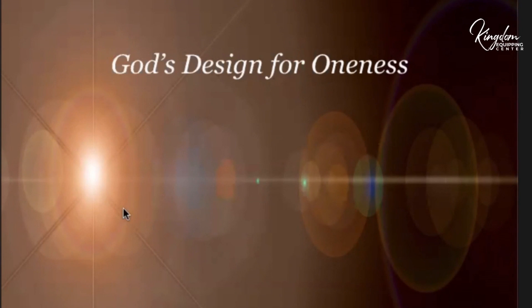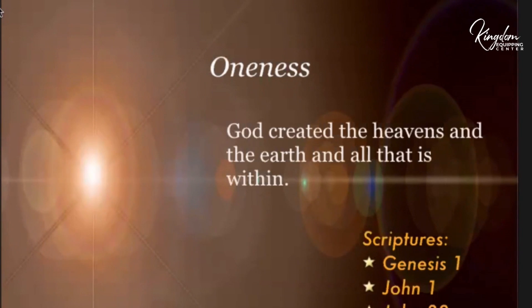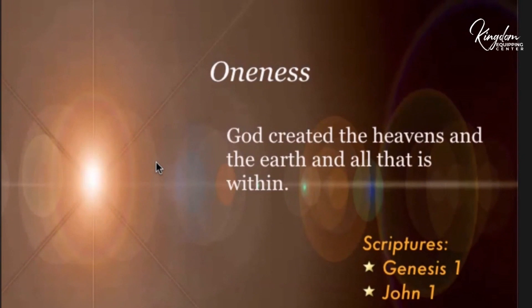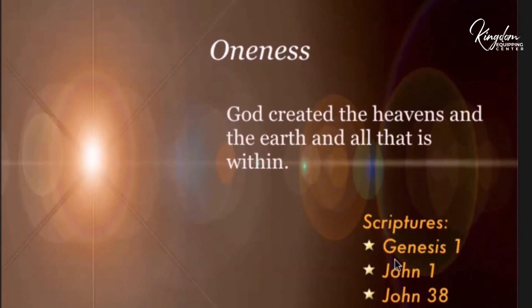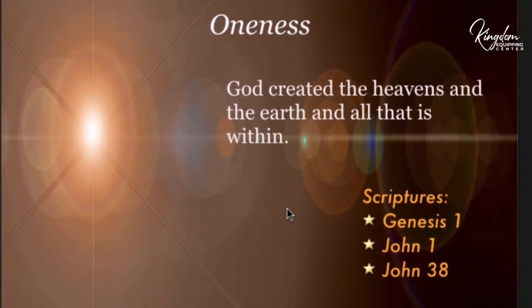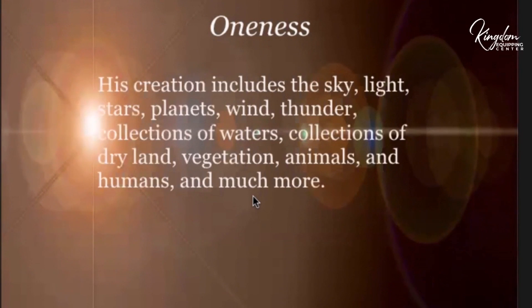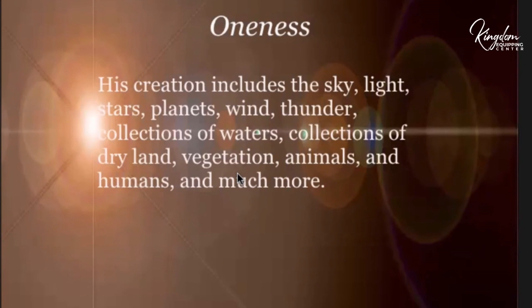Starting with God's design for oneness — it begins in Genesis. God created the heavens and the earth and all that is within. That's oneness. You can get details by going to Genesis 1, John 1, and John 38. His creation includes the sky, light, stars, planets, wind, thunder, collections of water, collections of dry land, vegetation, animals, humans, and much more. That's a pretty large scope, and we'll see that it goes from that cosmic view all the way down to the quantum subatomic view.